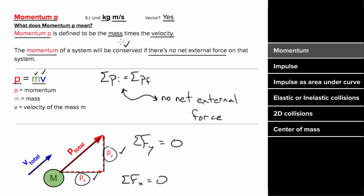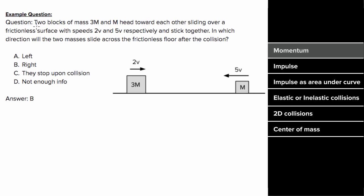So what's an example problem involving momentum look like? Let's say two blocks of mass 3m and m head toward each other, sliding over a frictionless surface with speeds 2v and 5v respectively. And after the collision, they stick together. Which direction will the two masses head after the collision?